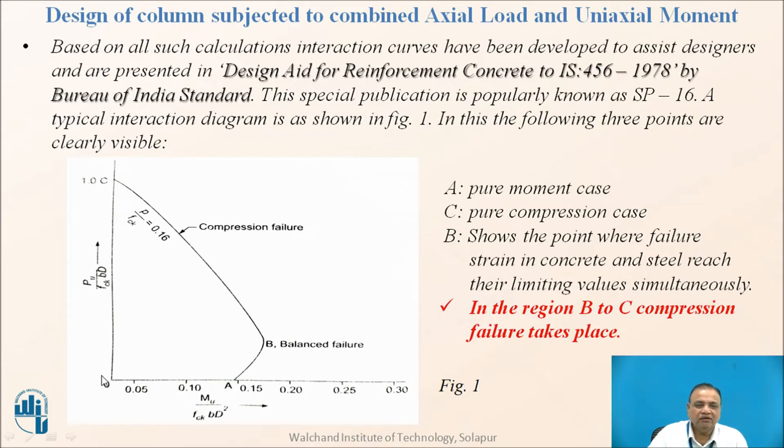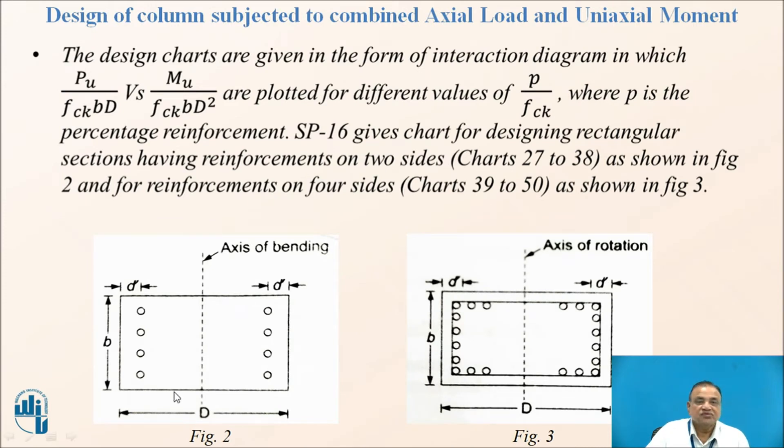Here you find along the y-axis we are having PU upon FCKBD and along x-axis MU upon FCKBD square. This is to convert the values into non-dimensional parameters. PU is the load. Similarly, FCKBD is also a load, this is acting load and this is carrying capacity. Similarly here also, moment and its carrying capacity.